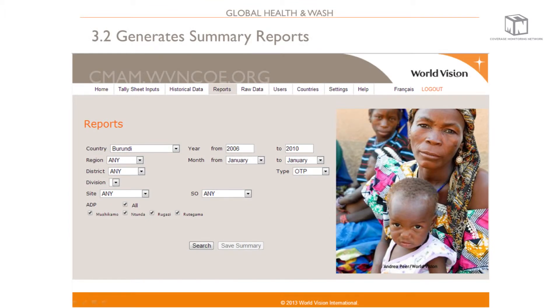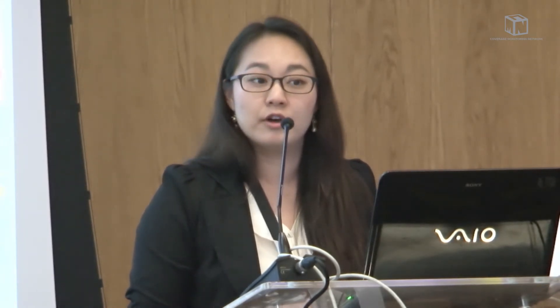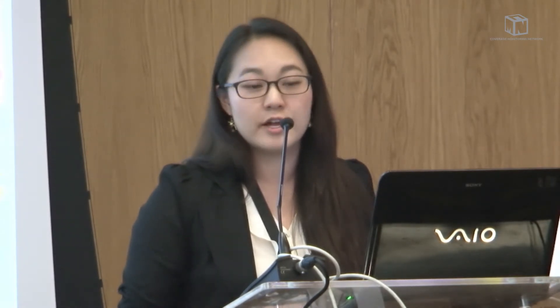The second functionality is the automatic generation of summary reports and graphs. You can generate summary reports down to the site level, which is the lowest level, then aggregate information up to division, district, regional, and country level. You can also generate reports for support offices — for example, World Vision Germany can select Burundi and view summary reports for only the sites they are funding. You specify the month-to-year range and the type of report, such as OTP or SC.